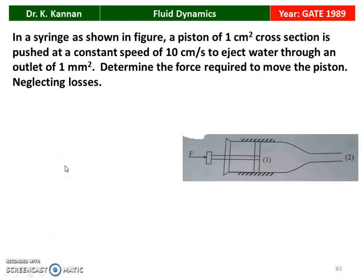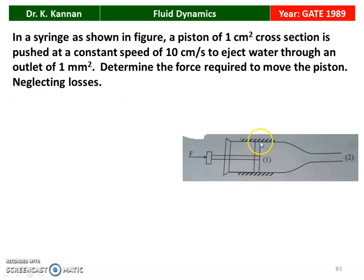Next question from the 1989 question paper. In a syringe as shown in the figure, a piston of 1 cm² cross section is pushed at a constant speed of 10 cm/s to eject water through an outlet of 1 mm². Determine the force required to move the piston, neglecting losses. Section 1 has area equal to 1 cm², section 2 has area equal to 1 mm², and we need to find the piston force.